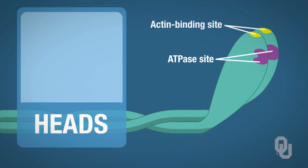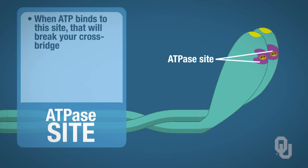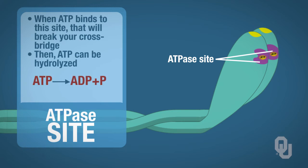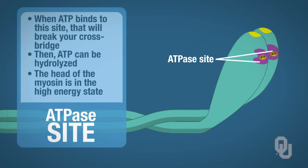Let's focus on the ATPase site first. There is an ATPase site on each head. This is where ATP binds, and when ATP binds to this site, that will break your crossbridge. Then ATP can be hydrolyzed — remember your products are ADP plus a phosphate. When ATP is hydrolyzed after breaking the crossbridge, the head of your myosin is in the high energy state. That will be very important when you learn about crossbridge cycling.